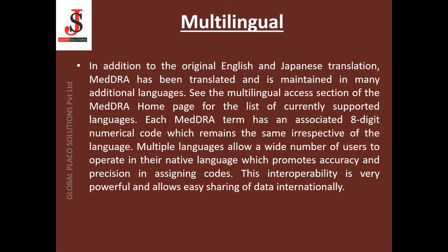Let's see the features of MedDRA one by one. The first one is multilingual. In addition to the original English and Japanese translations, MedDRA has been translated and is maintained in many additional languages — available in more than 15 languages. Each MedDRA term has an associated eight-digit numerical code which remains the same irrespective of the language. Multiple languages allow a wide number of users to operate in their native language, which promotes accuracy and precision in assigning codes. This interoperability is very powerful and allows easy sharing of data internationally.